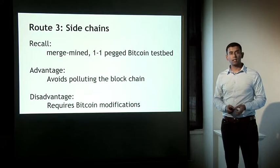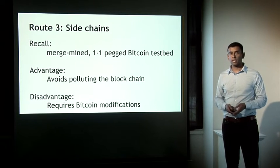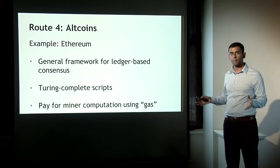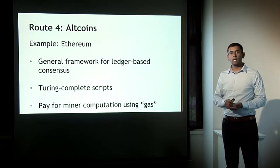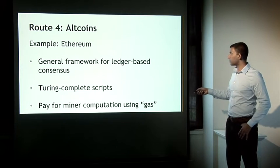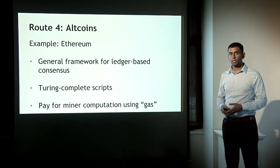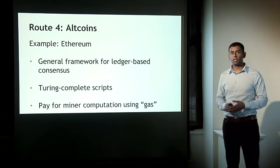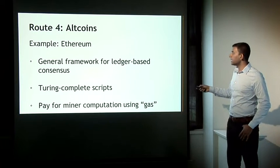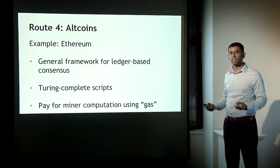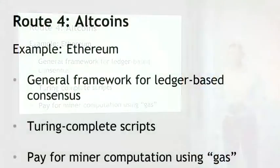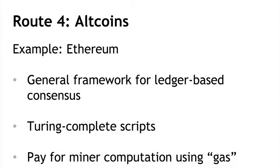Now let's get to the final route: having a totally separate alternate chain. The best example is Ethereum, which is intended from the ground up as a platform — a general framework for ledger-based consensus that you can use for all kinds of things, even creating your own currencies. The key feature is that instead of Bitcoin's limited stack-based scripting language, Ethereum provides a Turing-complete script. This seems weird at first because a mining node executing a script could get stuck in an infinite loop.